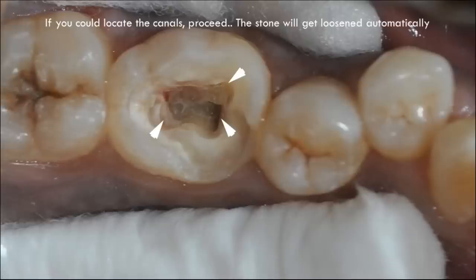Take a 10 or 15 size K file and gently negotiate the canals in its anatomic locations. As per my view, this is the most effective among all the techniques. The root canals will have nerves and blood vessels so they don't get frequently calcified like the pulp chamber. It may look like unbelievable but even though there is a big pulp stone covering the entire pulpal floor, simply try to tease a file between the pulp stone and the walls of the access cavity. Magically, it will always get into the canal. If you could locate the canals, then proceed with cleaning and shaping. Before you finish cleaning and shaping, the pulp stone will automatically get loosened and it will come out.